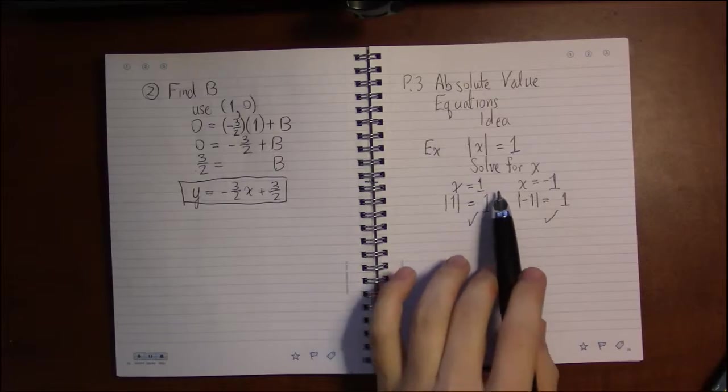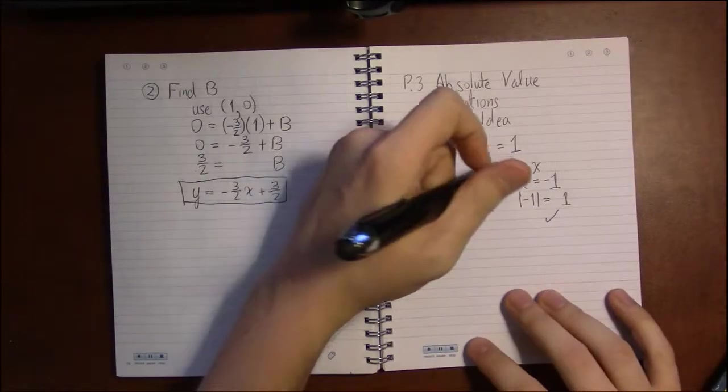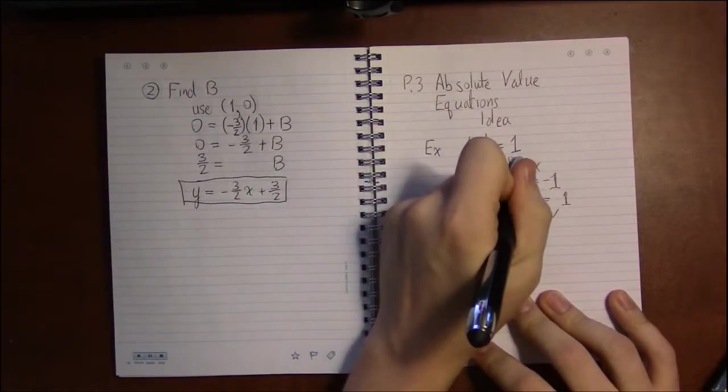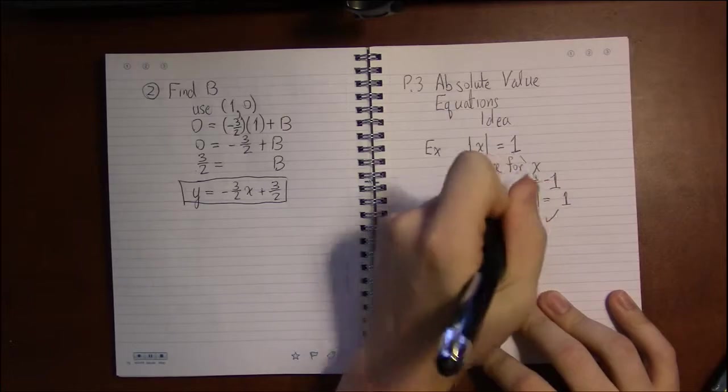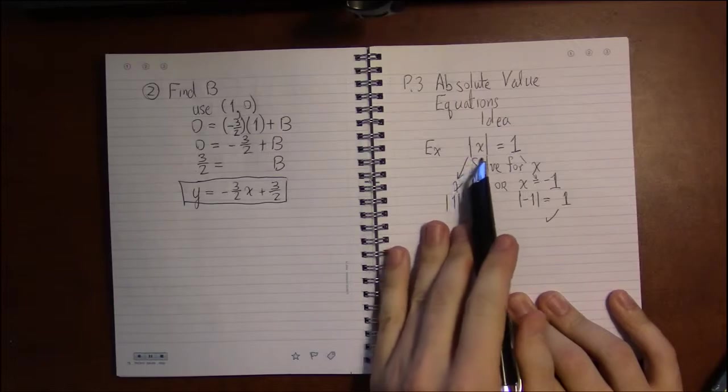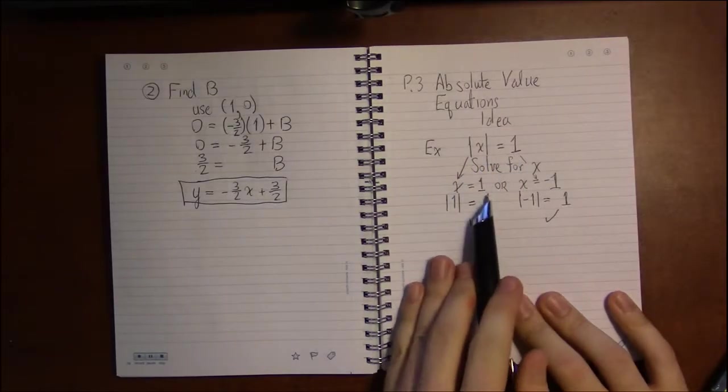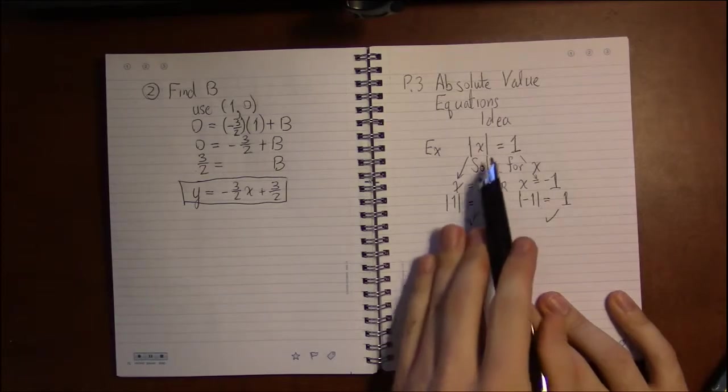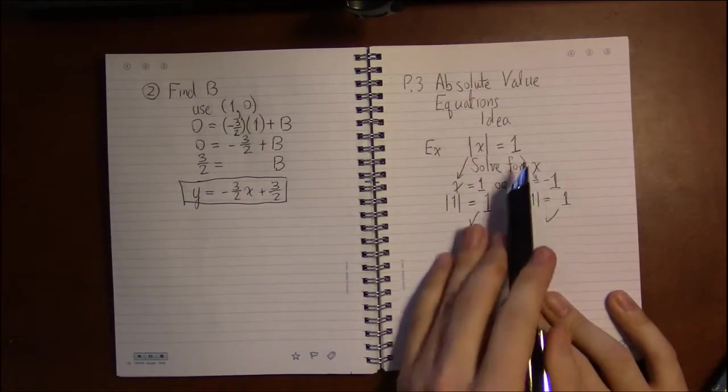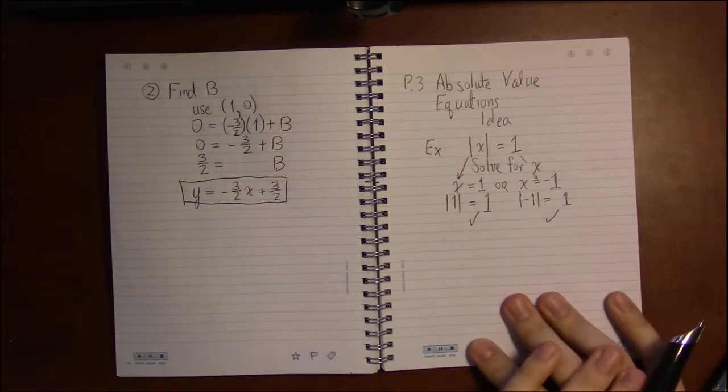So that's the basic idea. This is the key idea of absolute value equations: they split up into two separate equations. One where what you have inside the absolute values equals the positive version of the right-hand side, and one where what's between the vertical bars equals the negative of the right-hand side.